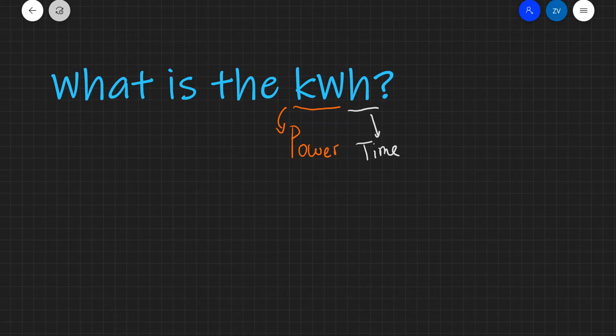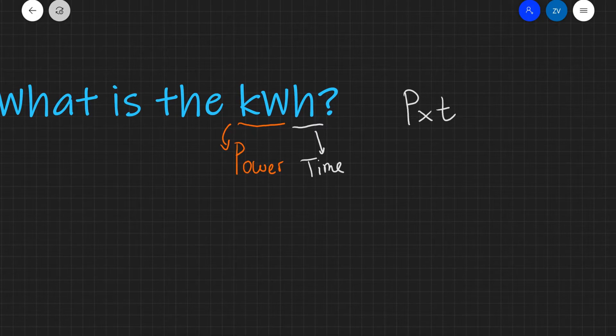So the kilowatt hour will be a quantity which is power multiplied by time. Well if we remember, power is equal to electrical energy, or any energy for that matter, divided by time.